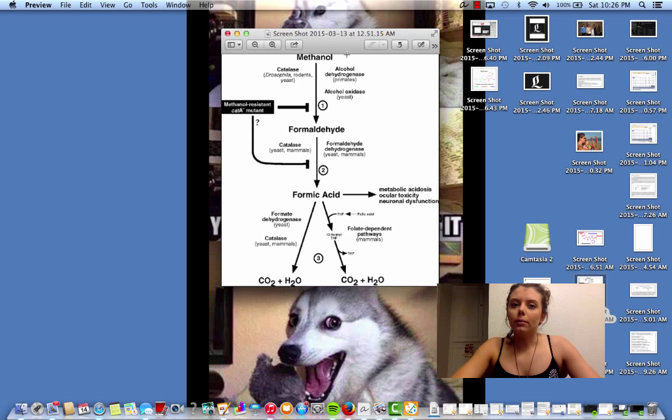But what happens is your body has ways to break down methanol, has ways to break down formaldehyde, has ways to break down formic acid. It turns formic acid into CO2 and H2O. So before formic acid can actually hurt you, it's turned into carbon dioxide and water.